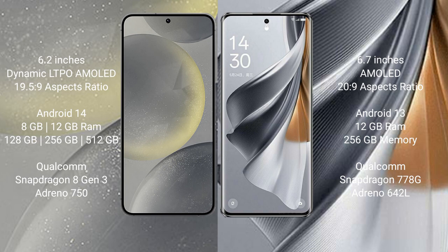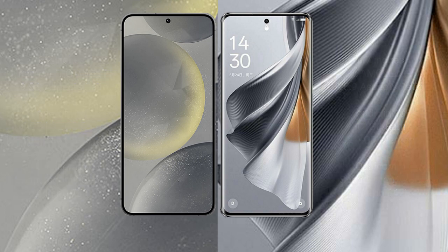Samsung Galaxy S24 comes with 8GB and 12GB RAM, 128GB and 256GB internal storage, powered by a Qualcomm Snapdragon 8 Gen 3 processor and Adreno 950 GPU. Oppo Reno 10 Pro comes with 8GB and 12GB RAM, 256GB internal storage, powered by a Qualcomm Snapdragon 778G processor and Adreno 642L GPU.